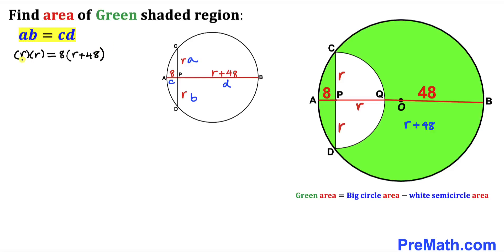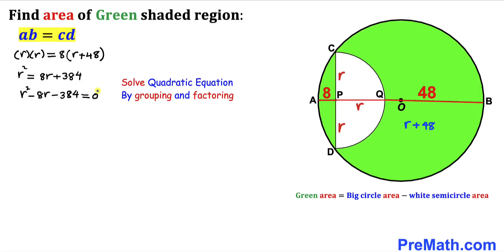Multiplying r times r gives us r squared. Distributing the right side gives us 8r plus 384. Moving everything to the left-hand side, we get our quadratic equation, which we are going to solve by grouping and factoring.